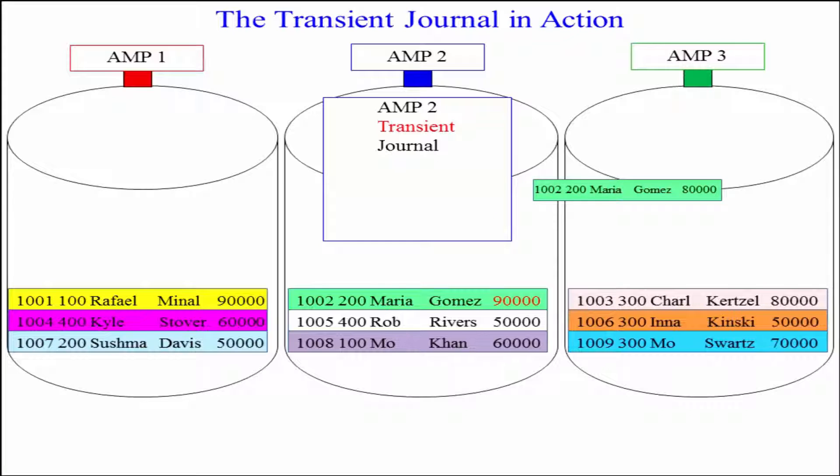It's called transient journal because it never keeps it permanently. If the transaction is successful, it throws the picture away. If there's anything that goes awry, it just replaces the before image, says there's an error, and everything's back to normal. It's for database integrity.